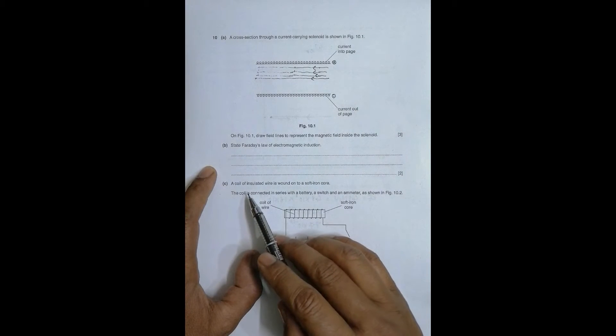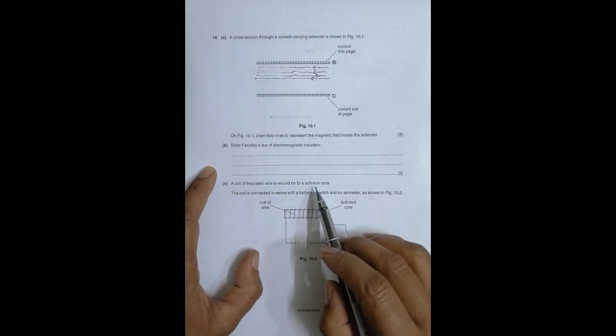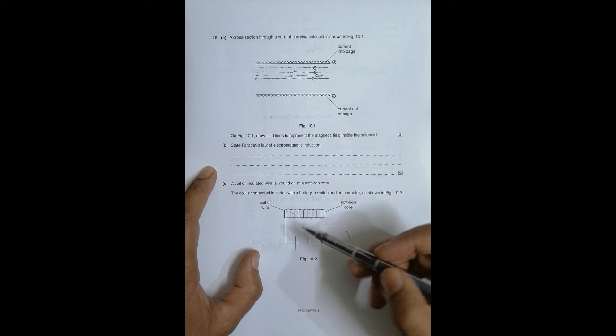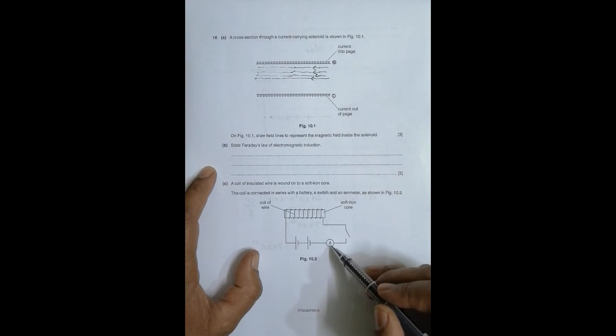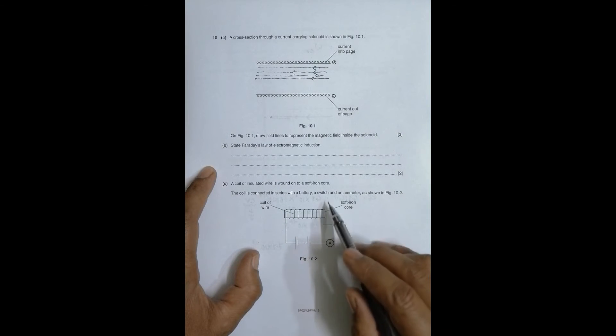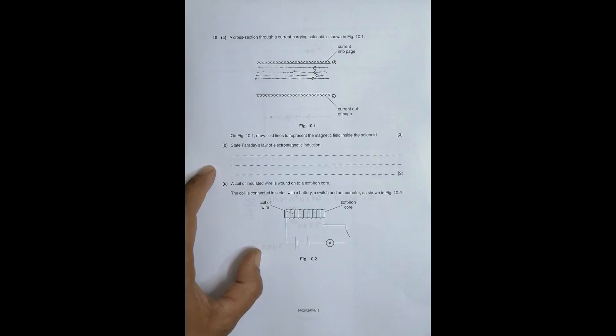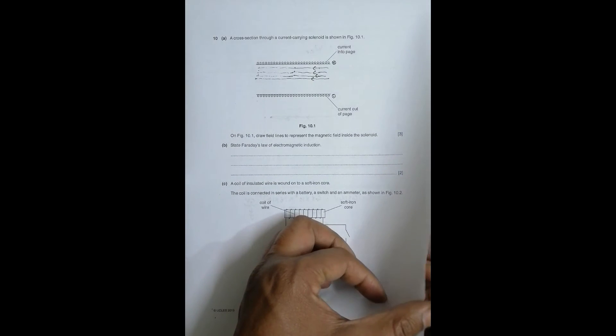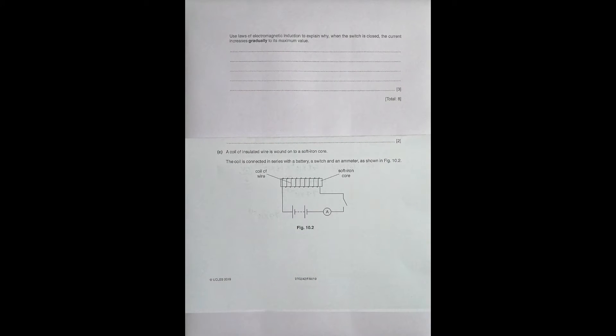Part C describes a coil of insulated wire wound onto a soft iron core, connected in series with a battery, a switch, and a meter. The question asks us to use the laws of electromagnetic induction to explain why, when the switch is closed, the current increases gradually to its maximum value rather than immediately.